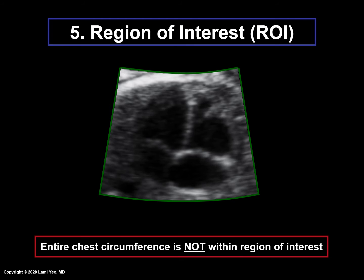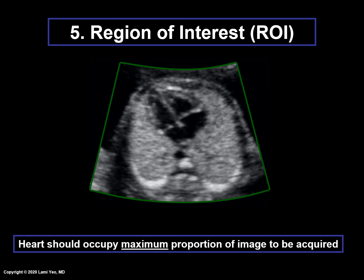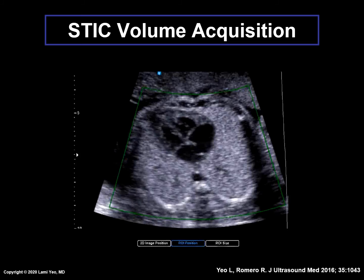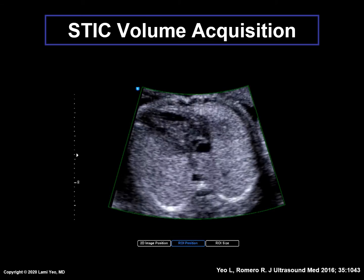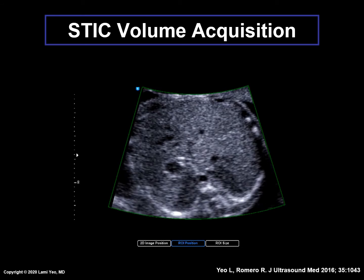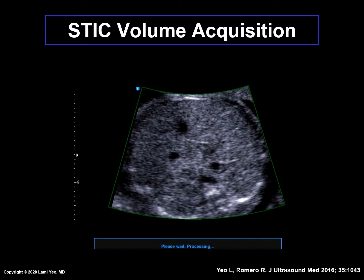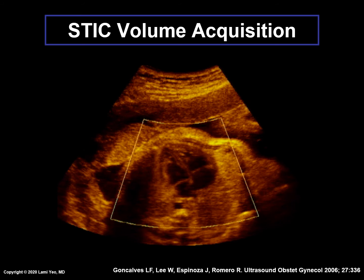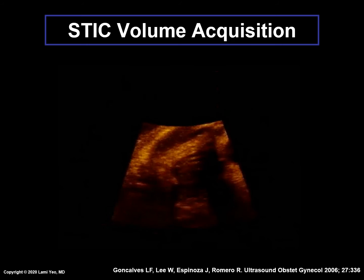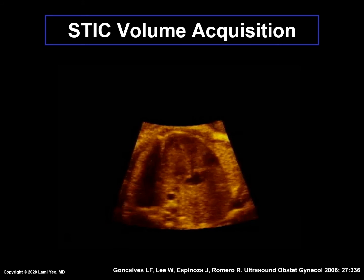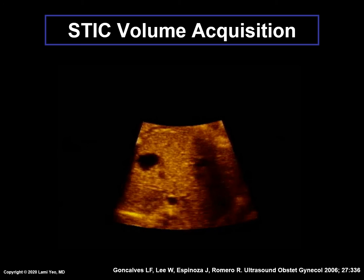The region of interest box should also be adjusted to encompass the entire fetal chest circumference, so that it contains all the anatomic information of the fetal heart. In this example, the entire fetal chest circumference is not within the region of interest box. Finally, the fetal heart should occupy the maximum proportion of the image to be acquired. During the actual STIC volume acquisition, it is important to observe on the ultrasound monitor screen the sequential images within the region of interest box, so it will be apparent if either the size or location of the region of interest box is inappropriate. For this example, the sector width is wide and the frame rate is not being maximized, and magnification of the fetal heart is not being performed — all of which will affect the image quality of the STIC volume dataset.